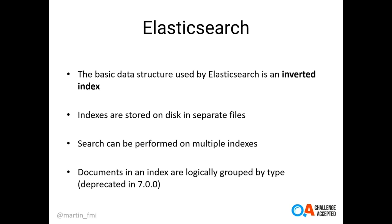The basic data structure used by Elasticsearch is an inverted index. Elasticsearch uses this data structure because it provides really nice capabilities for searching data. Indexes are stored on disk in separate files by means of Lucene segments, and searches can be performed on multiple indexes at once. In earlier versions of Elasticsearch, documents used to be grouped by type, but that was deprecated in version 7.0. The index is now the primary unit of grouping of documents that are indexed in Elasticsearch.